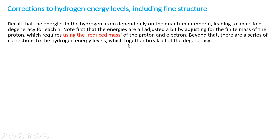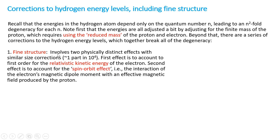Beyond that, there are a series of corrections to the hydrogen energy levels which together actually break all of the degeneracies. The first one is what we call fine structure. It involves two physically different effects, although they have similar size corrections — about one part in 10 to the 4, or one part in 10,000 compared to the regular energy levels of hydrogen.